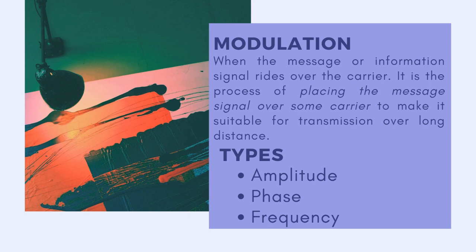In amplitude modulation, the amplitude of the carrier will be modulated. When the phase of the carrier is modified, it is called phase modulation. Similarly, for frequency modulation, the frequency of the carrier will be modulated according to the message signal or modulating signal.